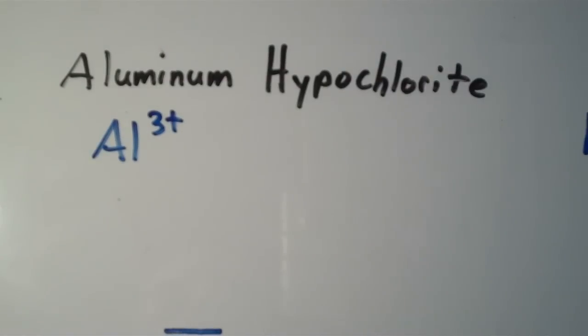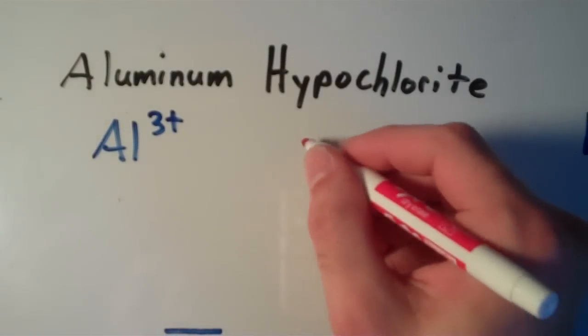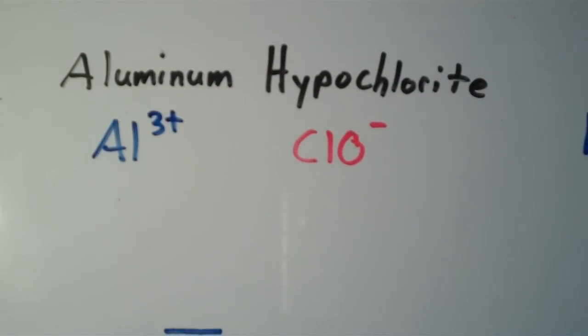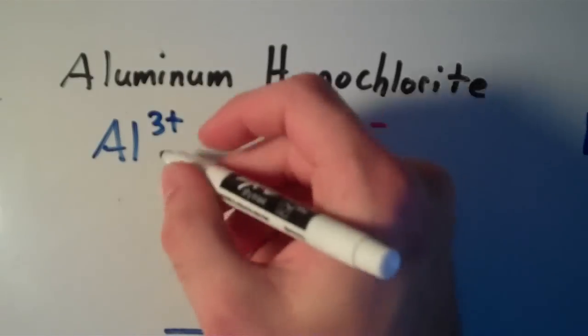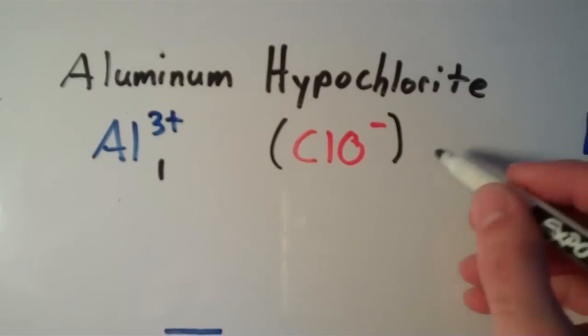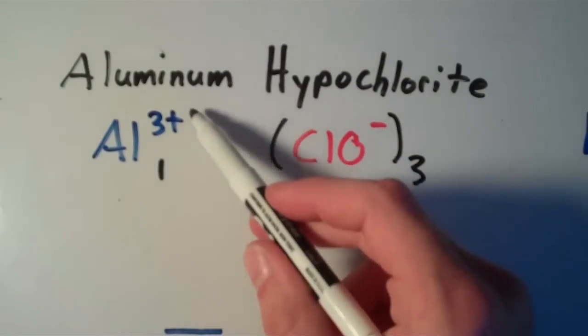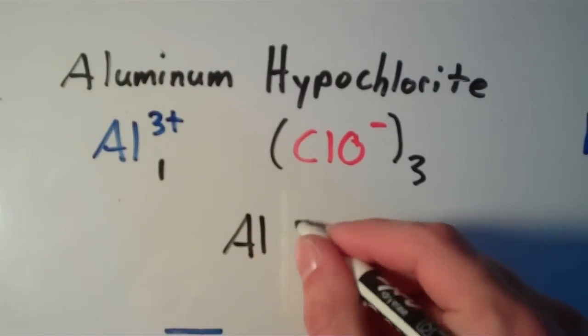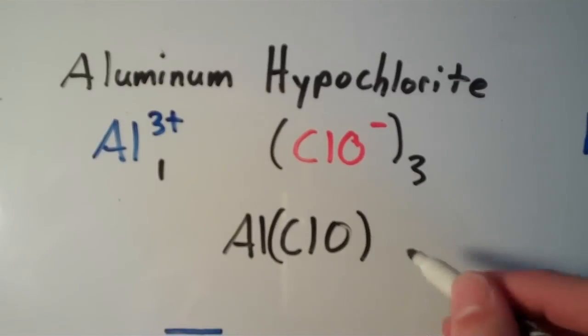Our hypochlorite ion, that's just another polyatomic ion, is going to be ClO, and it has a -1 charge. So now let's adjust the subscripts. We can leave our aluminum alone, give it a subscript of 1, and then we can triple the amount of hypochlorite ions. +3 times 1, that's just going to be +3. -1 times 3, that's going to be -3. So if we add +3 plus -3, we'll get neutral, or 0. So our final formula is going to be Al(ClO)3.